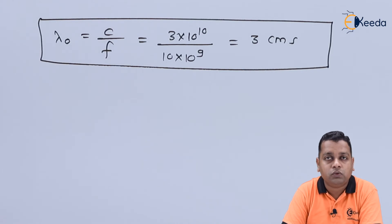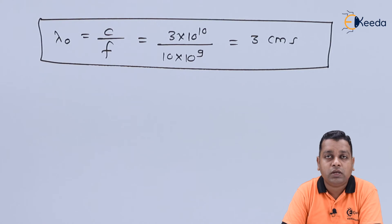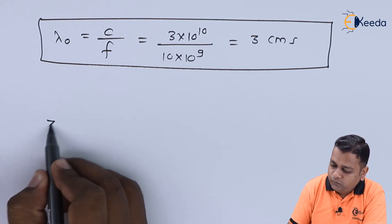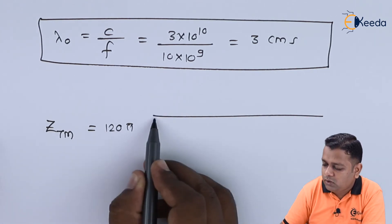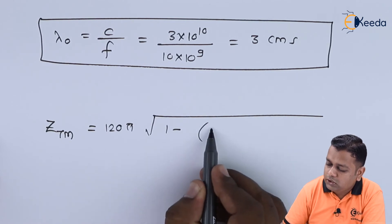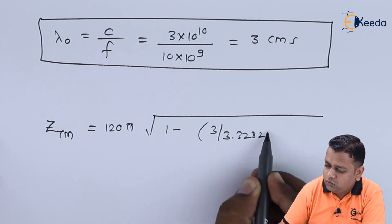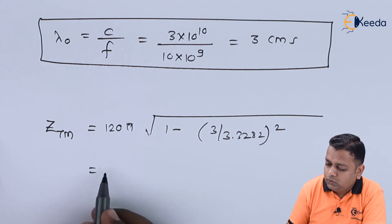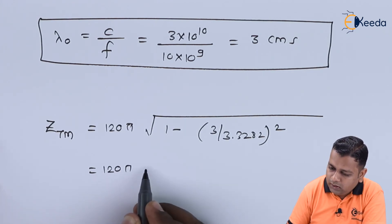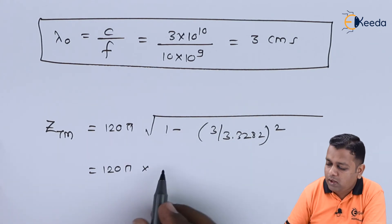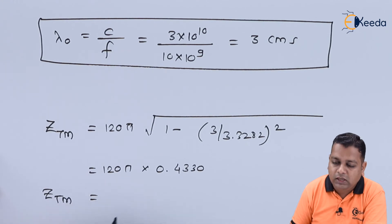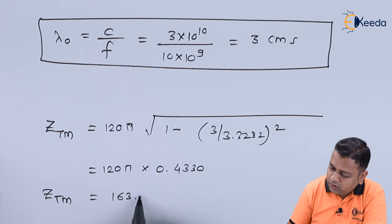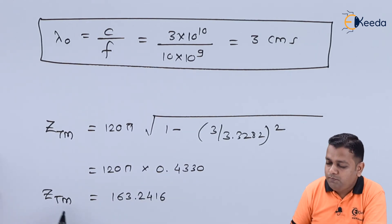Both λ₀ and λ_c have been determined, and we have the intrinsic impedance η = 120π. Substituting these three parameters into the equation, Z_TM = 120π × √(1 − (3 / 3.3282)²). Simplifying the square root gives 0.4330, so Z_TM = 163.2416 ohms.